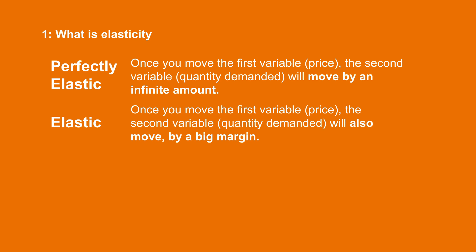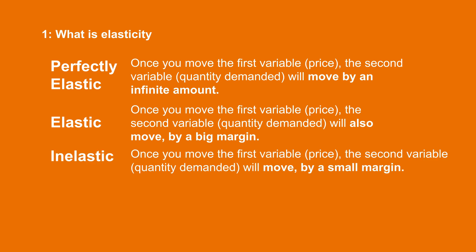If the relationship between the two variables is elastic, this means that once you move the first variable — price — the second variable — quantity demanded — will move by a large margin. If the relationship is inelastic, once you move the first variable — price — the second variable — quantity demanded — will move by a small margin.